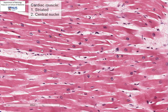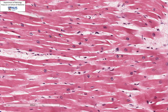Just to revise your histology, this is striated muscle, and the reason why this is not skeletal muscle is that you can see nuclei in the center of the cells, whereas in skeletal muscle, which is also striated, the nuclei are peripheral.